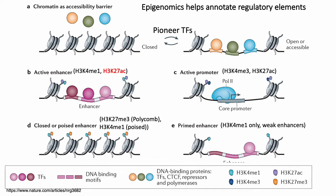Across the genome, there are different classes of enhancers. Enhancers marked by K27 acetylation are generally some of the strongest enhancers you can see on a genome. On the other hand, enhancers marked with just K4 monomethylation are generally considered weak enhancers, associated with lower levels of activation. They're also called primed enhancers, because it's easier to quickly activate them — all you need to do to turn a primed enhancer to an active enhancer is add K27 acetylation.